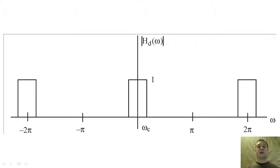The first type of filter is the low-pass filter. This filter passes all frequency content below a critical frequency, omega-c, and removes all frequency content above the critical frequency.